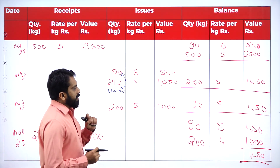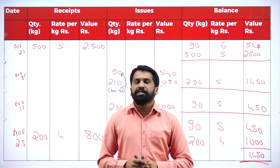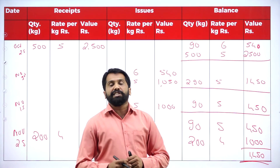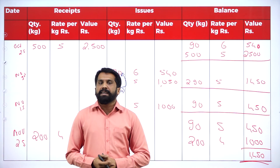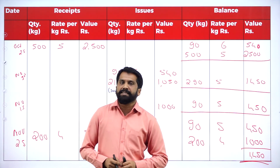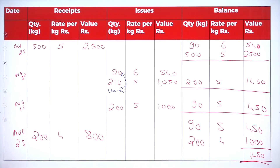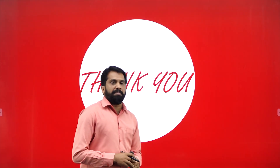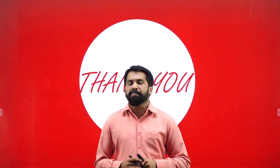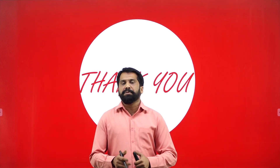That is all for problem number 3. The major point in this problem is the shortage adjustment — shortage, pilferage, or theft must all be treated as issues. You can take a screenshot of the solution. Part 1 of the solution covers up to October 15th, with the September 30th adjustment entry. Part 2 covers the remaining entries. This completes today's session — we worked through one complete problem together. Thank you and we will meet in the next session.